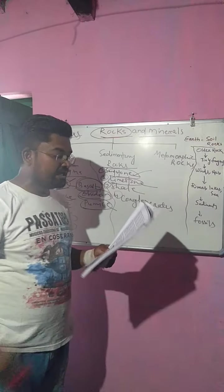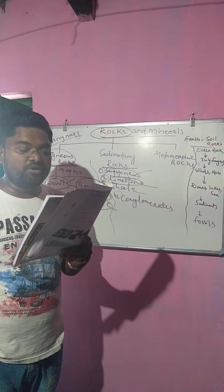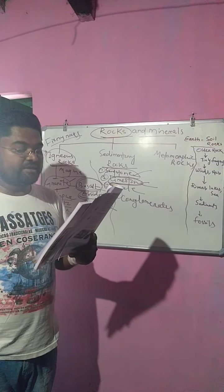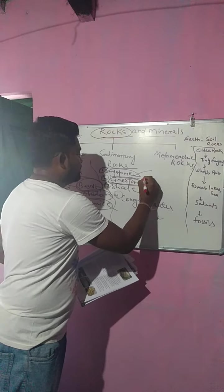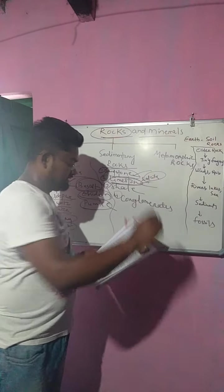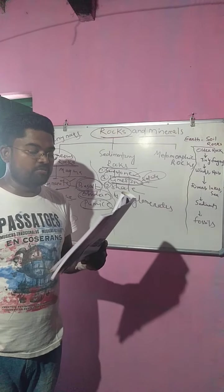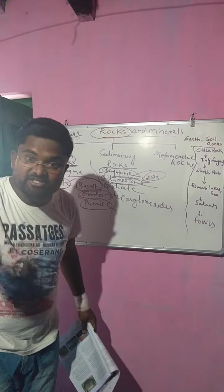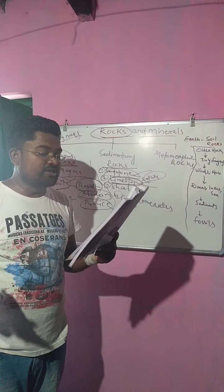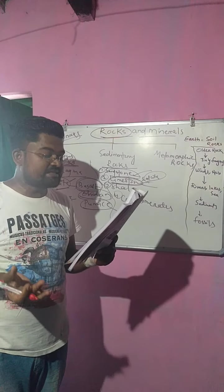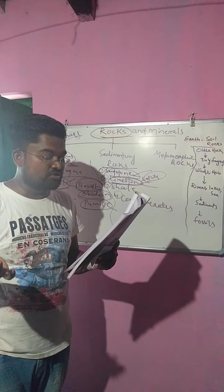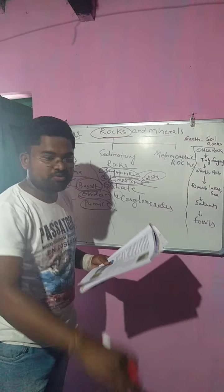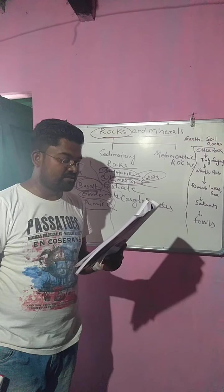Now let's talk about limestone. Limestone mainly consists of a mineral called calcite. Calcite comes from calcium. Calcite is formed from the cells and skeletons of tiny sea animals. When these animals die, their shells and skeletons settle on the seabed and become calcite.